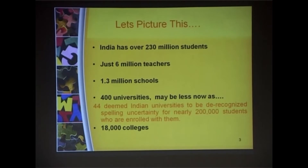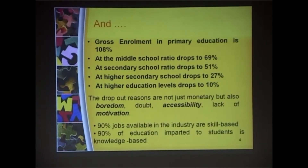We have around 350 universities — the latest news reported that 44 deemed universities were deregistered — and we have only 18,000 colleges all over India. The gross enrollment from primary education to higher education drastically drops from 108 percent to a mere 10 percent.